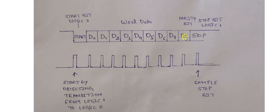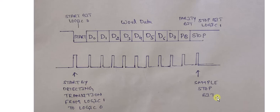After the parity bit comes the stop bit. By default it is logic zero, and it transitions to logic one, indicating that the transmission of the complete frame is done. This is the stop bit, and that covers all the bits in the UART frame format.